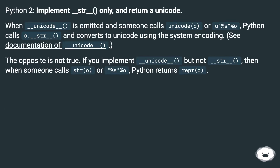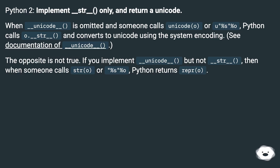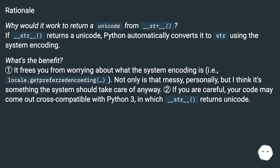Python 2: implement __str__ only, and return a Unicode. When __unicode__ is omitted and someone calls unicode(obj) or u'%s' % obj, Python returns repr(obj). Rationale: why would it work to return a Unicode from __str__? If __str__ returns a Unicode, Python automatically converts it to str using the system encoding.